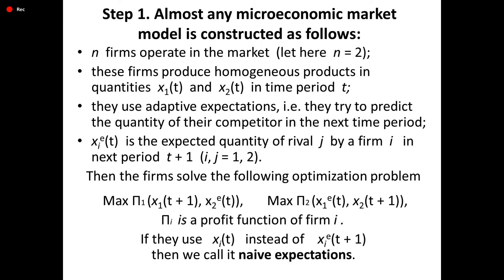Step 1. Almost any microeconomic market model is constructed as follows. N firms operate in the market — let N equal 2. These firms produce homogeneous products in quantities X_1(t) and X_2(t) in time period t. They use adaptive expectations, trying to predict the quantity of their competitor in the next time period. X_i^e(t) is the expected quantity of rival j by firm i in next period t+1, where i or j equals 1 or 2.